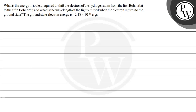Hello, let's read this question. The question says: what is the energy in joules required to shift the electron of the hydrogen atom from the first Bohr orbit to the fifth Bohr orbit, and what is the wavelength of the light emitted when the electron returns to the ground state? The ground state electron energy is minus 2.18 into 10 raised to the power minus 11 ergs.